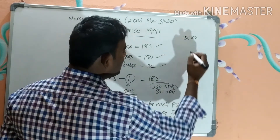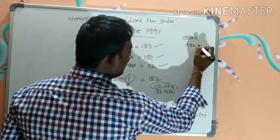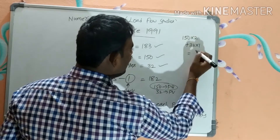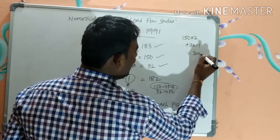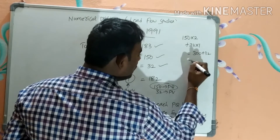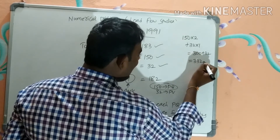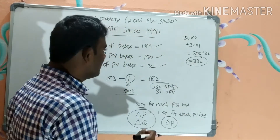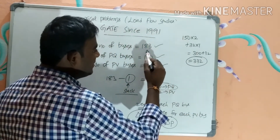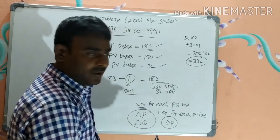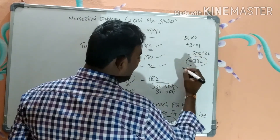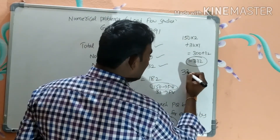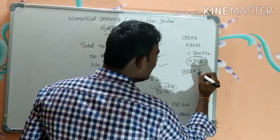One equation is needed for each PV bus. So: 150 PQ buses × 2 = 300 equations, and 32 PV buses × 1 = 32 equations. Total = 332 equations. If asked for the Jacobian matrix order, the order is 332×332.